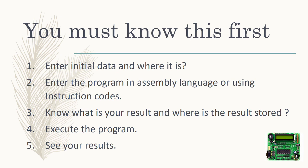Before you do anything, you must know the following. First, what is the initial data and where it is to be entered. For example, if we want to add two 8-bit numbers, those two numbers are stored in memory locations starting from C100H and C101H. We must initialize the data at C100H and C101H before executing the program. The program can be entered either in assembly language or by using instruction codes — that is, hexadecimal codes.